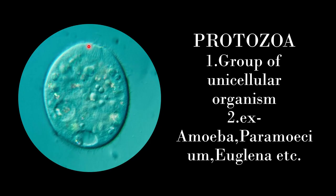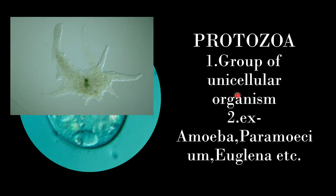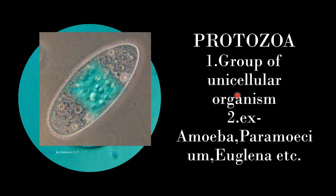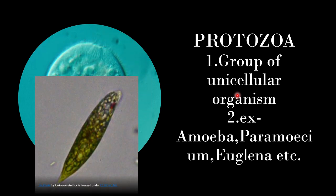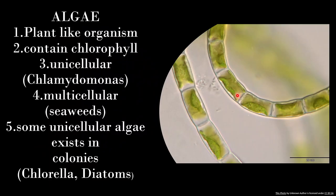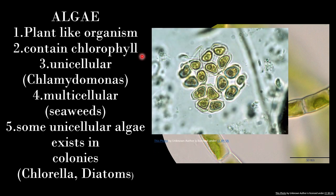The next type is protozoa. They are animal-like, unicellular organisms. Examples include amoeba, paramecium, euglena, and others.